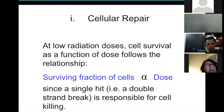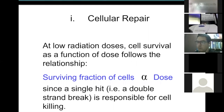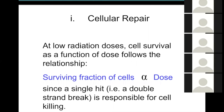At low doses, the relationship between dose and surviving fraction is written as: surviving fraction proportional to e^(−αD), where alpha is proportional to dose linearly. A single hit — a double-strand break — is responsible for cell death.